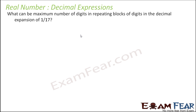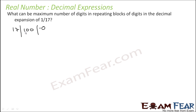Next question: what can be the maximum number of digits in the repeating block of digits in the decimal expansion of 1 by 17? To find this, we actually have to expand 1 divided by 17 and see what the maximum number of digits in the repeating block is. So let us begin: 17 into 1 — we can't divide, so we put a decimal point. It's 10, we can't divide 10, so it becomes 100. Multiplying by 5 gives 17 into 5 equals 85, leaving 15.